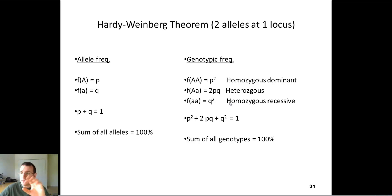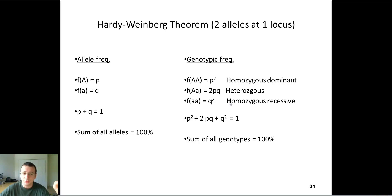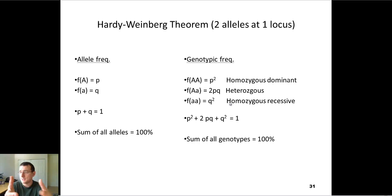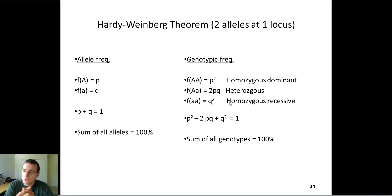For genotype frequency, they did something similar. The homozygous dominant genotype frequency is called P-squared, the heterozygous genotype frequency is 2PQ, and the homozygous recessive genotype frequency is Q-squared. Since you're going to have only three genotypes — two dominant alleles together, two recessive alleles together, or one dominant and one recessive — the sum of all genotypes equals 100%. So P-squared plus 2PQ plus Q-squared equals 1.